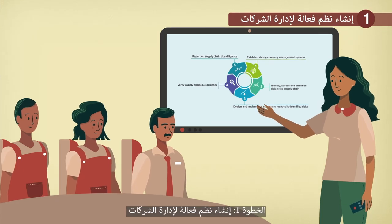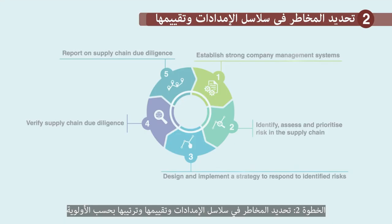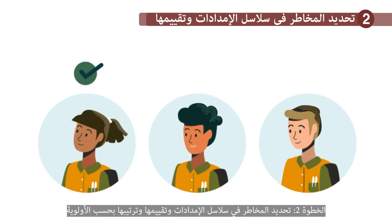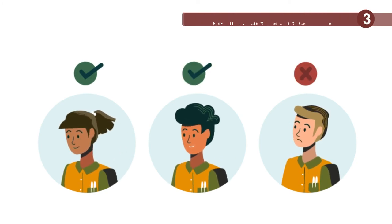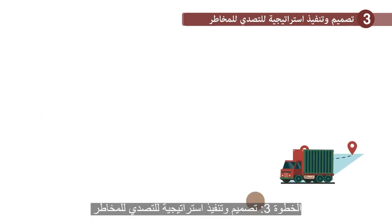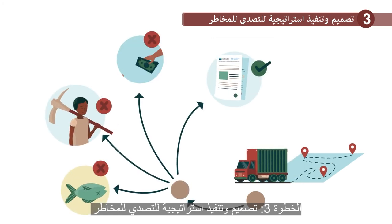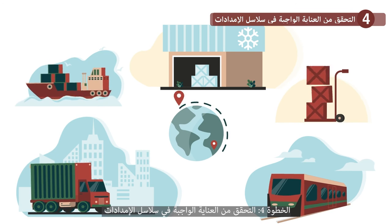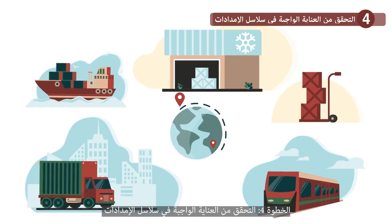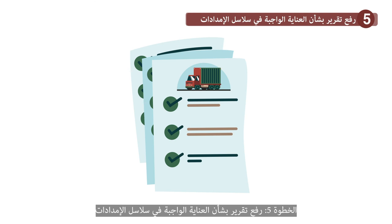Step 1: Establish strong company management systems. Step 2: Identify, assess and prioritise risks in supply chains. Step 3: Design and implement a strategy to respond to risks. Step 4: Verify supply chain due diligence. Step 5: Report on supply chain due diligence.